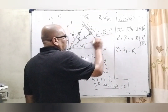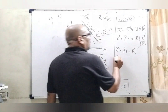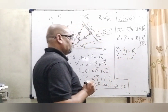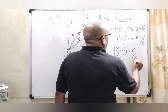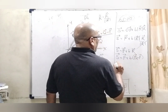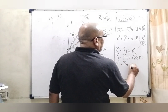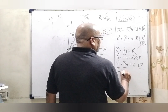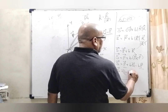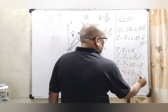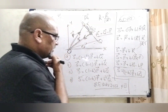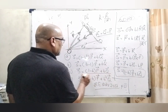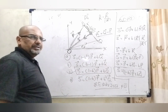Now, R vector can be written as Q vector minus P vector. Substituting: S vector equals P vector plus B into (Q vector minus P vector), which gives S vector equals P vector plus B Q vector minus B P vector. Collecting terms: S vector equals (1 minus B) P vector plus B Q vector. So option C is correct.